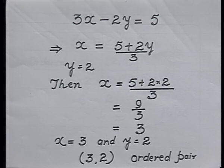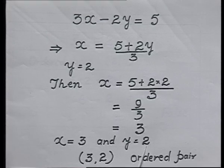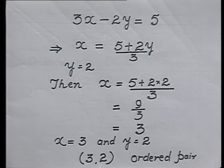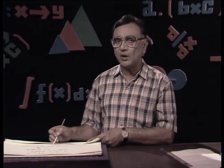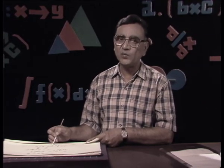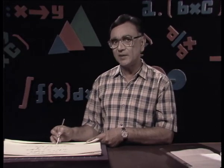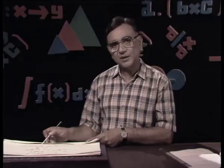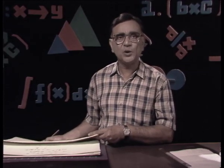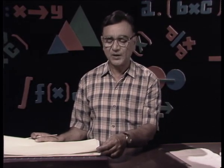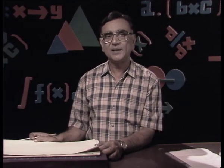Here the value of x is 3 and the value of y is 2, and both these values are written in the form of an ordered pair: (3, 2). Remember: in an ordered pair, the first number always represents the value of x and the second number is that of y. So whenever you write an ordered pair, the first value should be that of x and the next should be that of y.